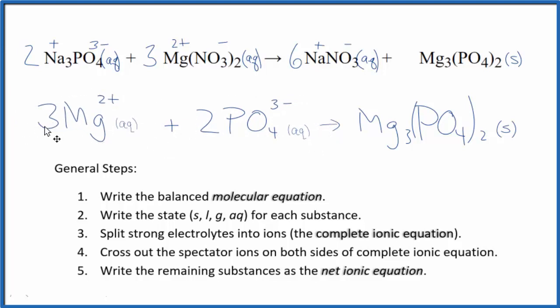If we look at the charge, we have 3 times 2 plus, that's 6 plus. 2 times 3 minus is 6 minus, so 6 plus 6 minus, they cancel out. Net charge of zero, and over here we have a net charge of zero as well.